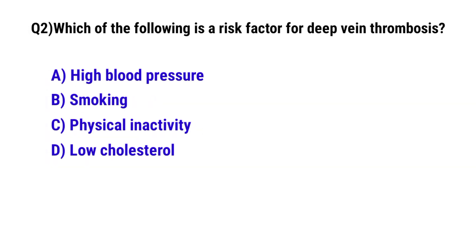Question No. 2: Which of the following is a risk factor for deep vein thrombosis? The correct option is C: physical inactivity.